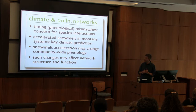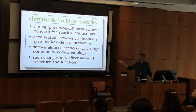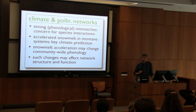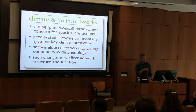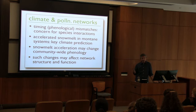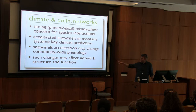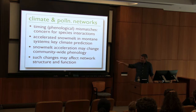In our system in Colorado and many montane systems, there's a prediction that we're going to see accelerated snow melt, which we know affects when plants bloom. We think this acceleration may very well change the blooming schedule across the entire plant community. In fact, there's amazing observational data at the Rocky Mountain Biological Lab for the last 45 years on plant flowering phenology, taken every other day across the entire season — data from David Inouye, now retired from the University of Maryland. We're curious whether these changes might actually affect the structure and functioning of these networks.